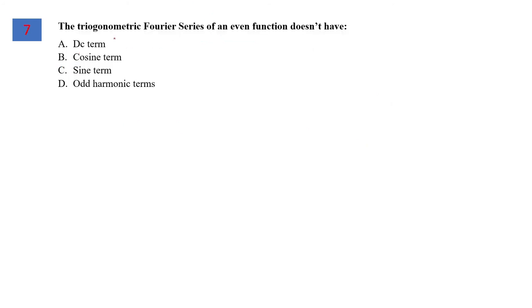Question number 7: The trigonometric Fourier series of an even function does not have what? When it's an even function, it will not have the sinusoidal term. Option C, sine term, is the correct answer.